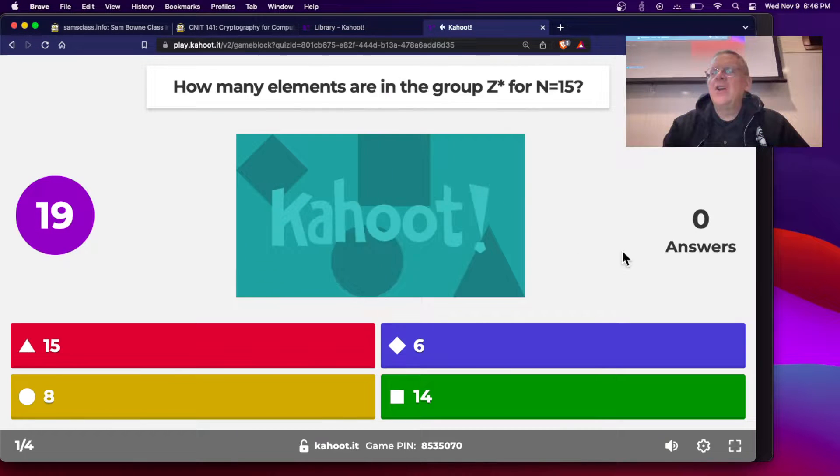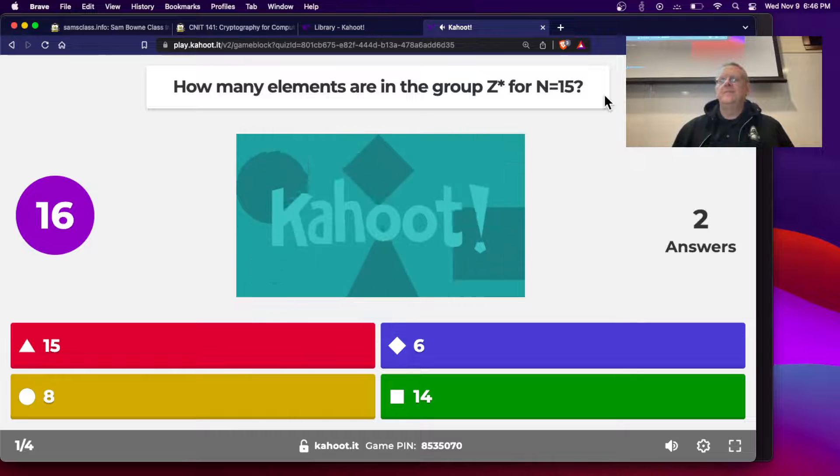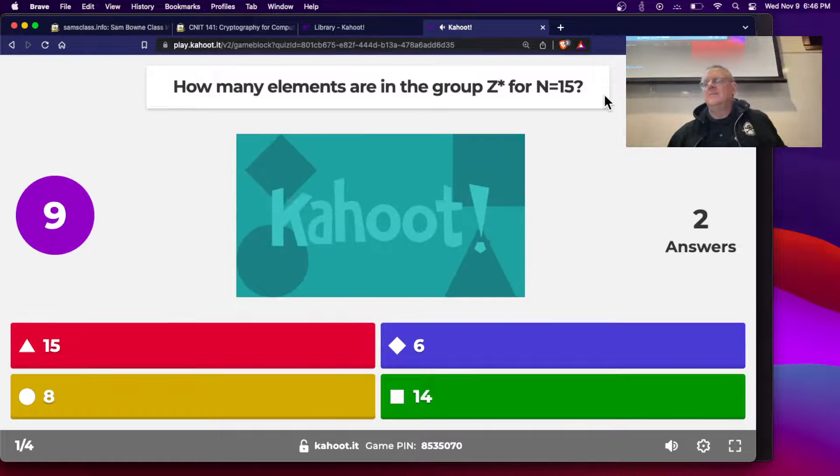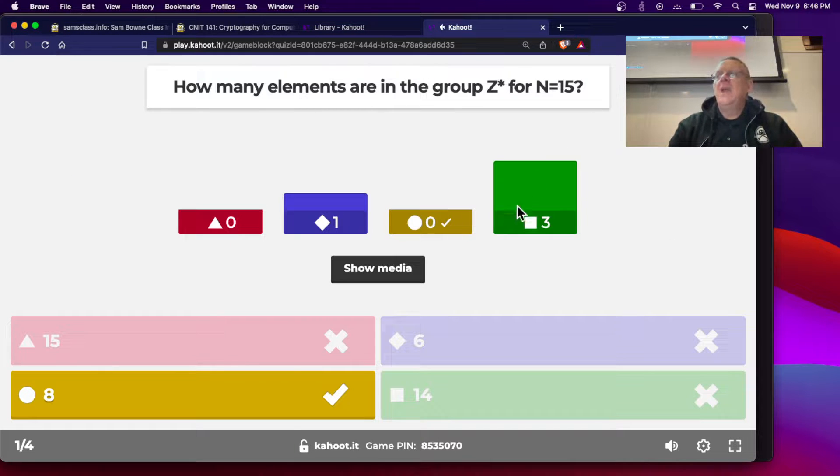So how many elements are in Z star N for N equals 15? It's eight. Because this is three times five, so you take two times four, P minus one times Q minus one, and you get eight. So nobody got it right, but that's what it is. It's going to be, you take N, which is the product of two primes, three times five, and you take P minus one times Q minus one, P is three, and Q is five, so P minus one is two, and Q minus one is four, and two times four is eight.